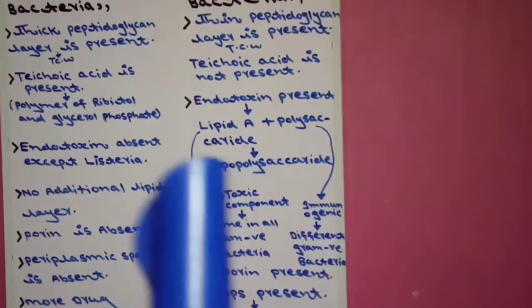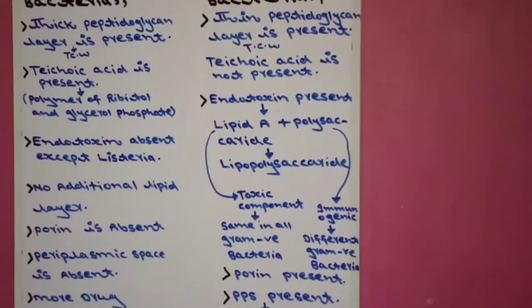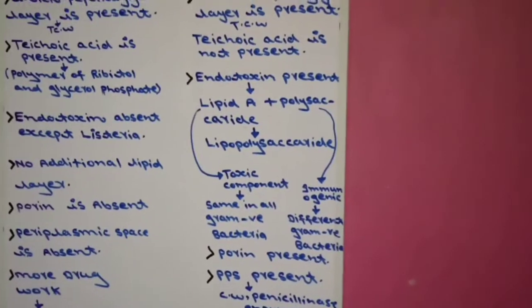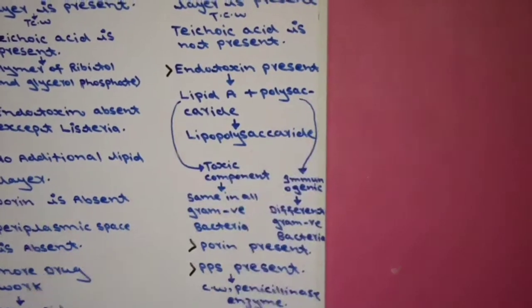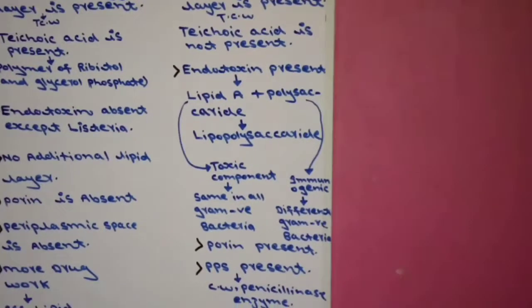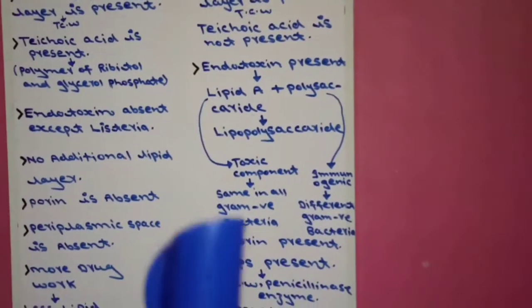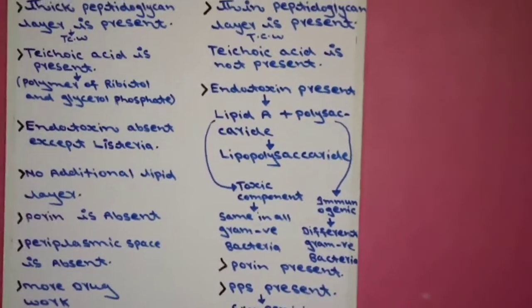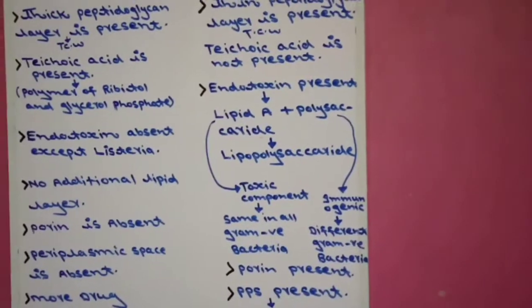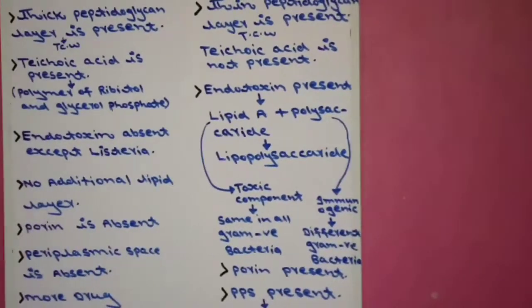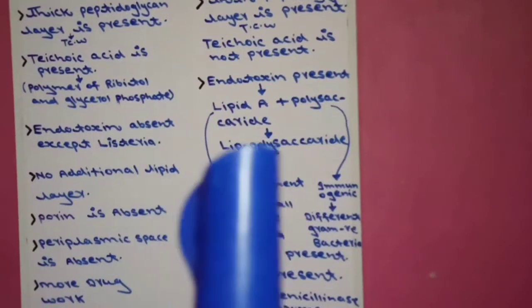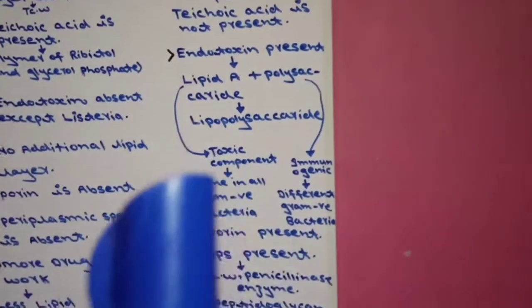Endotoxin is formed by two components: lipid A plus polysaccharide. Lipid A plus polysaccharide together make endotoxin. Endotoxin is also known as lipopolysaccharide — it is called lipopolysaccharide because 'lipo' refers to lipid A and 'polysaccharide' refers to polysaccharide, since endotoxin is formed by lipid A plus polysaccharide.